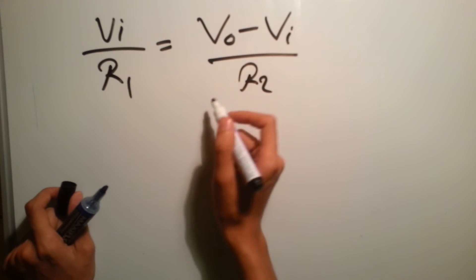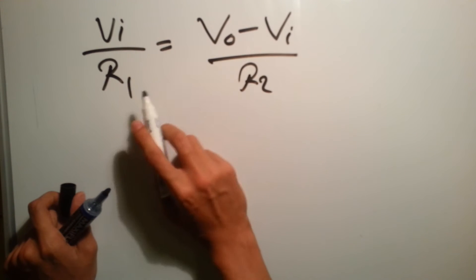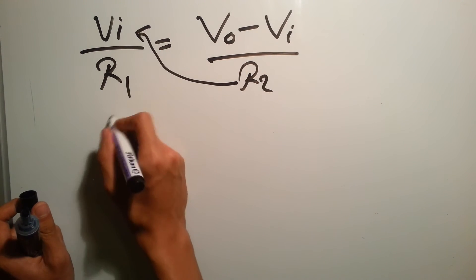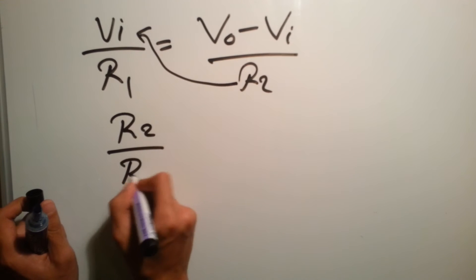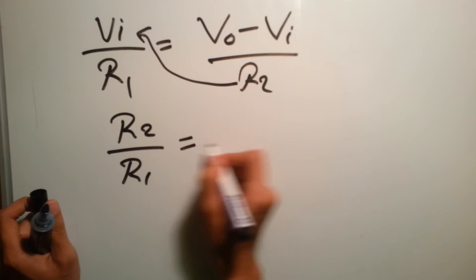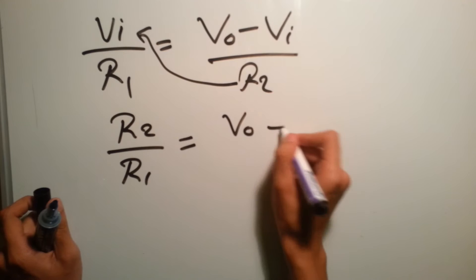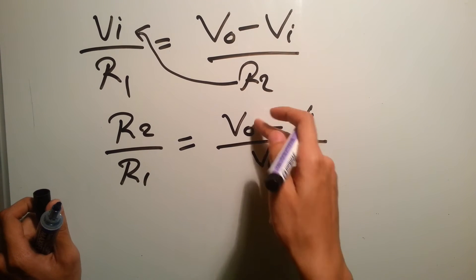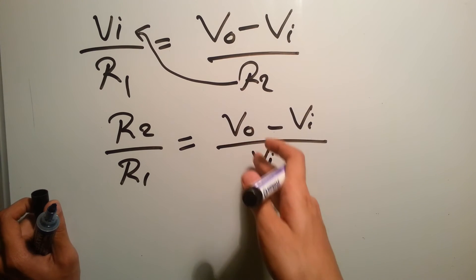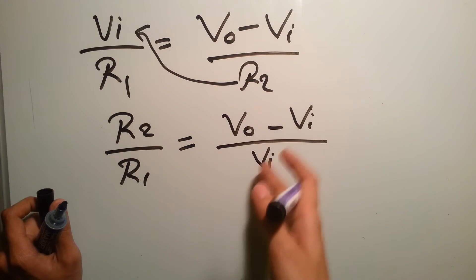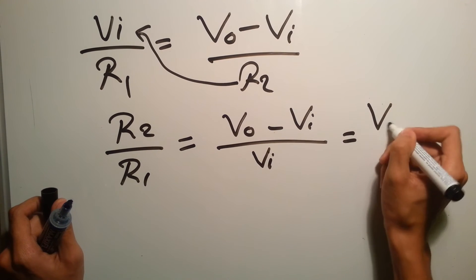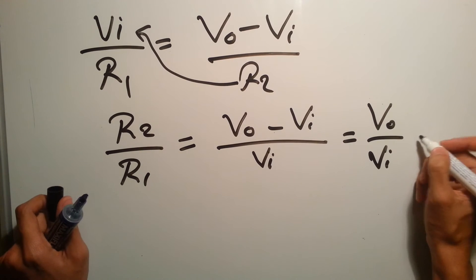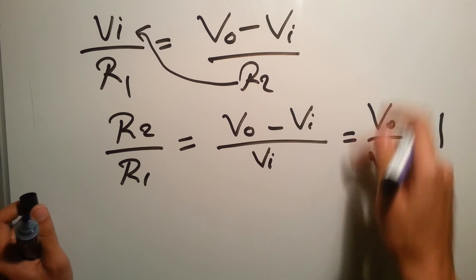So we need to calculate V output over VI. We take this to the other side, so it will be R2 over R1. Then we say that V output minus V input. We divide over VI, so it will be V output over V input minus V input over V input, which equals V output over V input, which is the gain we want to calculate, minus one.